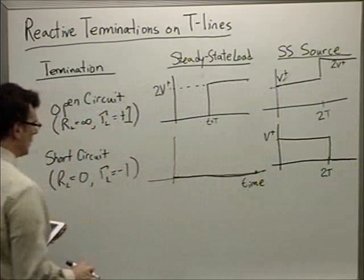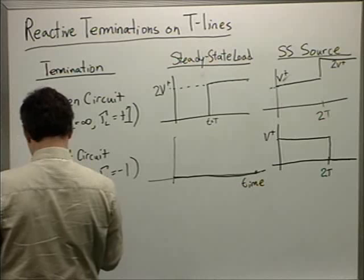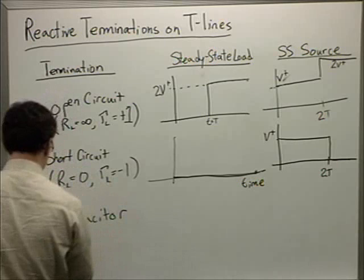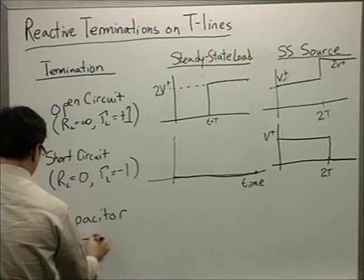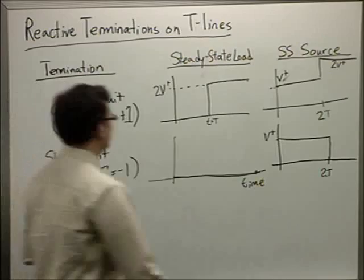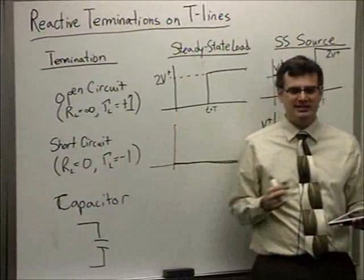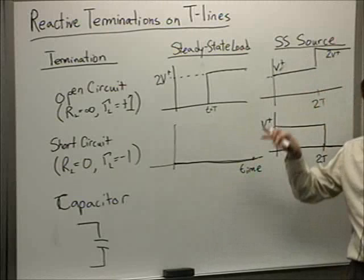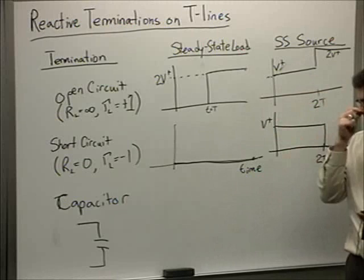Here's the brain teaser. We still have a matched source, but instead of an open or short circuit, I'm going to put a capacitor at the load. What does the steady-state load and the steady-state source do? We introduced the capacitor last lecture, but let's trace the actual transient through and see if we can get the telltale response of a capacitor out of this network.